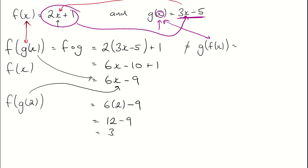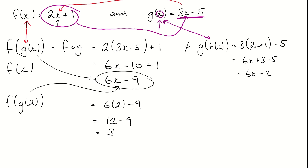I end up with 3 lots of my f of x take 5. When I expand those brackets out, I get 6x plus 3 minus 5, so 6x minus 2. That is most definitely not the same as 6x minus 9, so f of g of x is most definitely not the same as g of f of x — they're different.